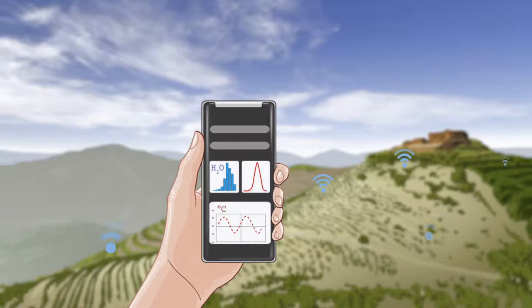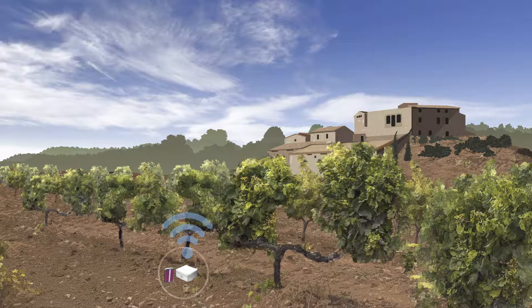These sensors will measure parameters such as humidity, temperature, or solar irradiance, allowing the wine grower to optimize their harvest.